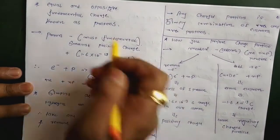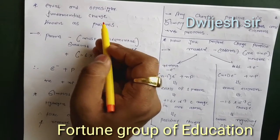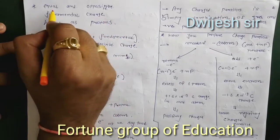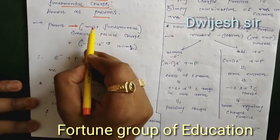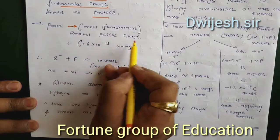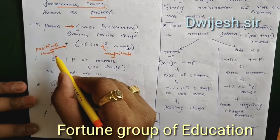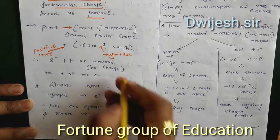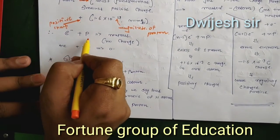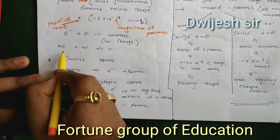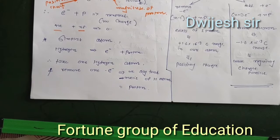The equal and opposite fundamental charge is known as the proton. Protons are positively charged — they are the most fundamental positive charge, with a value of plus 1.6 × 10⁻¹⁹ coulombs. The positive sign indicates positive charge and the negative exponent indicates the magnitude. When the number of electrons equals the number of protons, the result is a neutral atom with zero net charge.